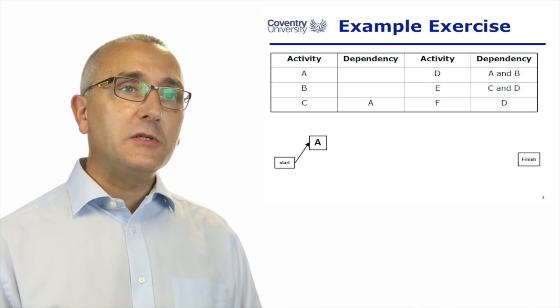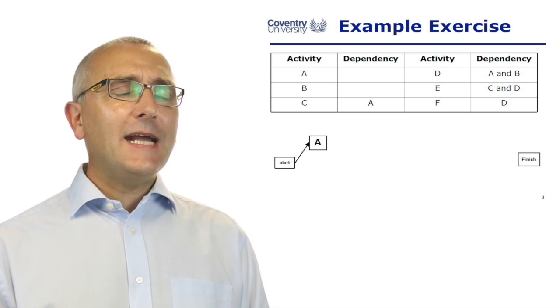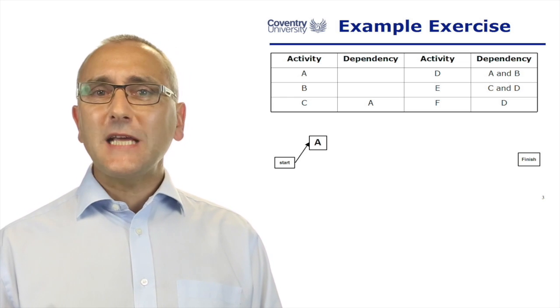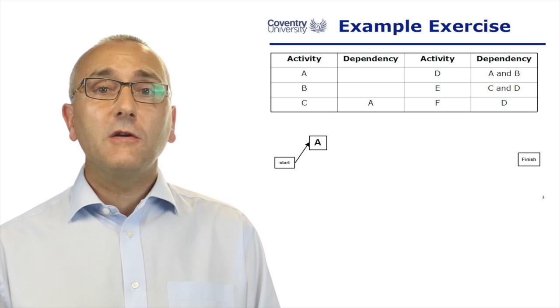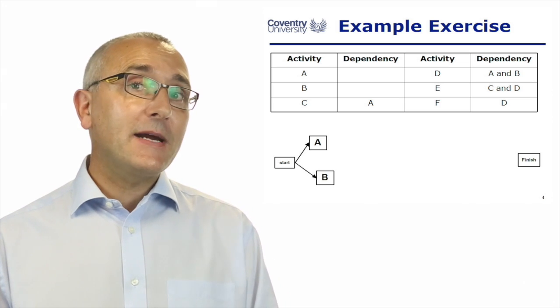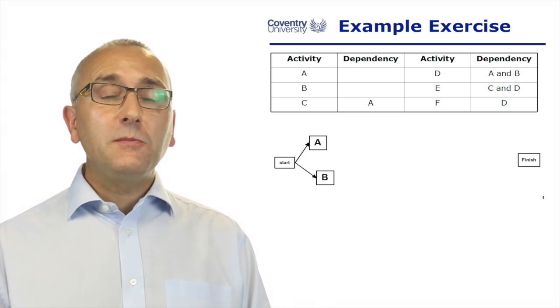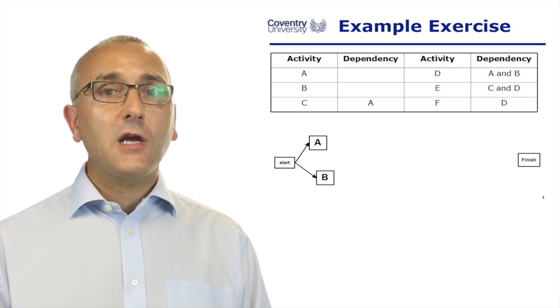And now we can start to write down those dependencies. Activity A doesn't seem to have any dependency, so it must come from the start. It's got to come from somewhere. And the same activity B hasn't got a dependency. It comes from the start.